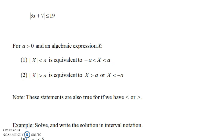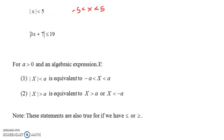On the other hand, if you have the absolute value of x greater than a — say the absolute value of some algebraic expression like 3x plus 7 is greater than the number a — that's equivalent to an 'or' type of compound inequality. It's equivalent to saying that either x is greater than a or it's less than negative a. We're going to do examples of both of these. These statements are also true if we have less than or equal to's or greater than or equal to's.